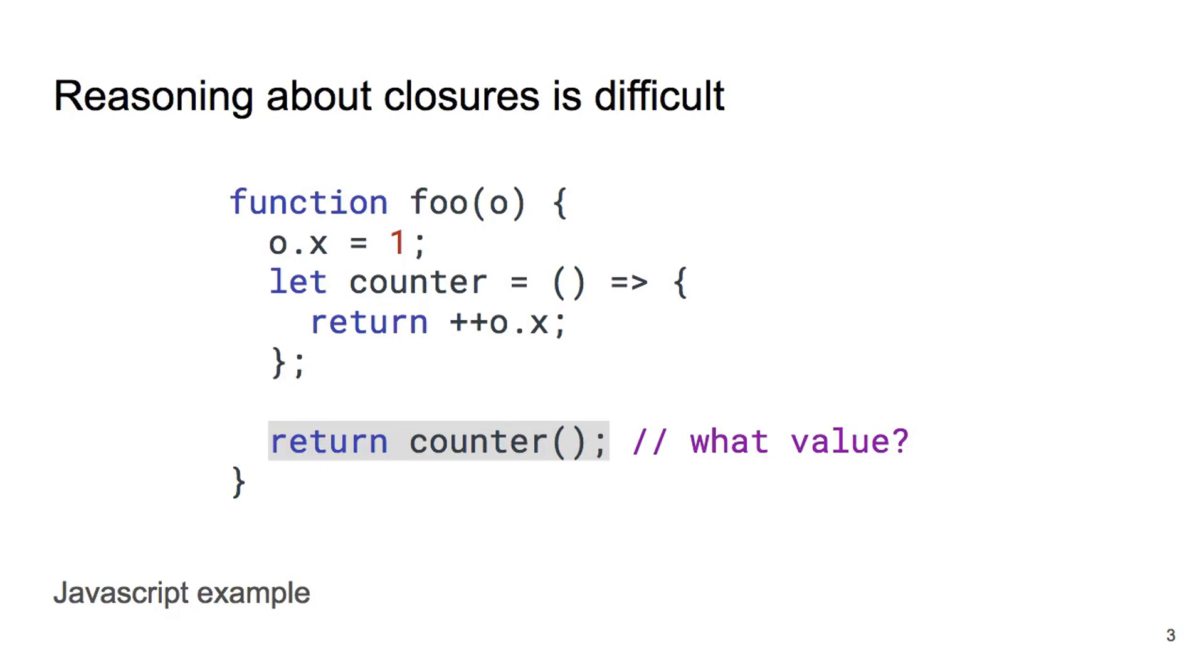We see a function foo which takes a single argument o. We set the field x of this object to 1. Then we create a closure counter. Notice that this function takes no arguments but still refers to o in its body. This means that o is taken or captured from the scope surrounding the declaration. This is called a closure.